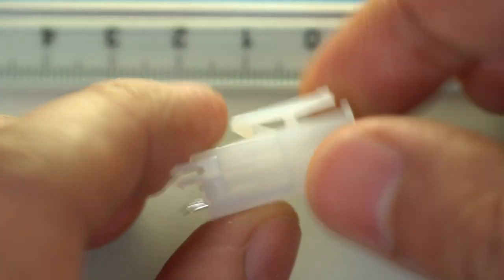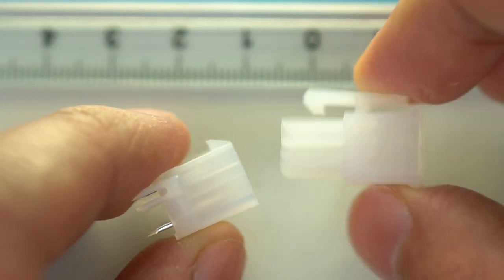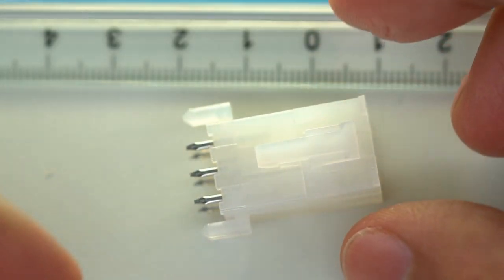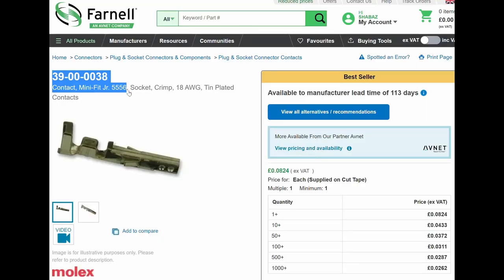To get going with Minifit JR, of course you need a crimp tool, and then in terms of consumables, the most basic part is the metal crimp socket contact. They are really cheap, I've got a strip of 100 of them for £3 from Farnell.